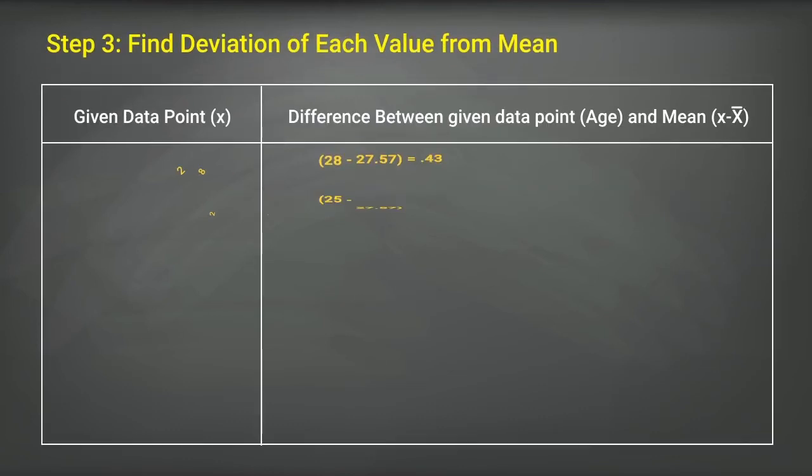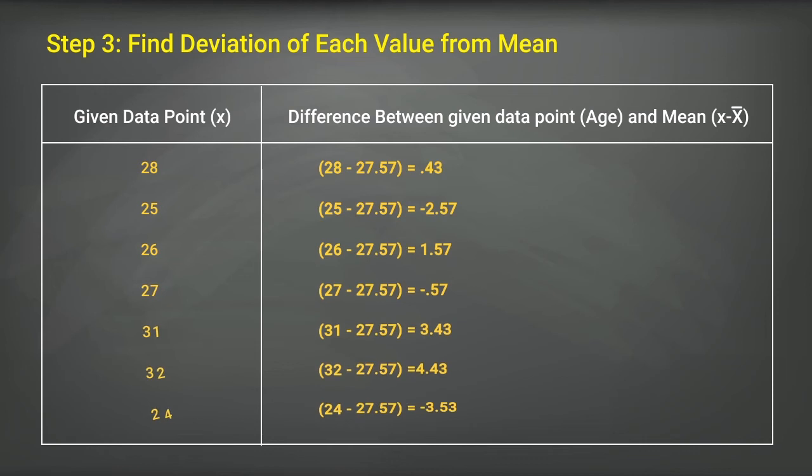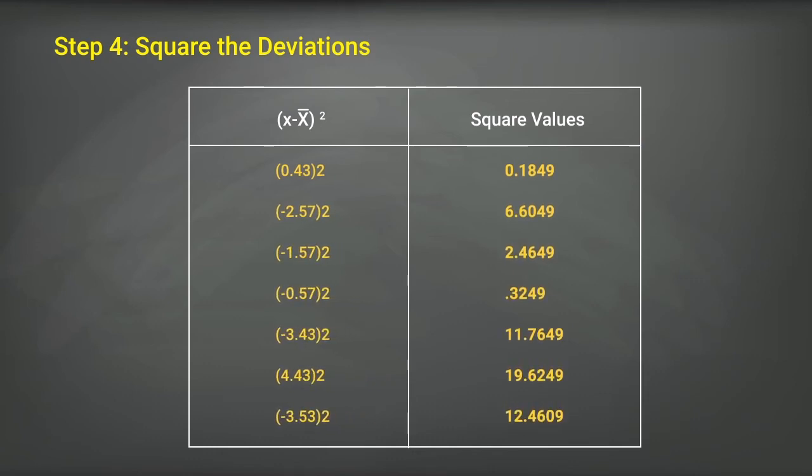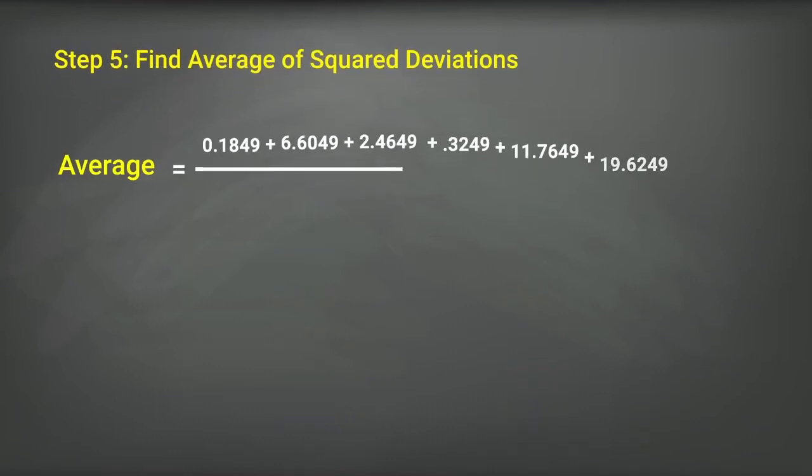Deviation of each value from mean is as follows. We square the deviations and find the average of all squared deviations.